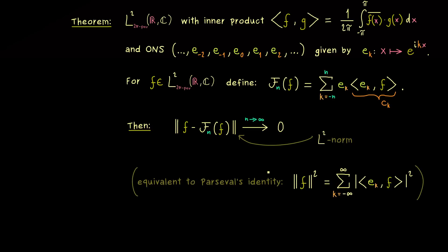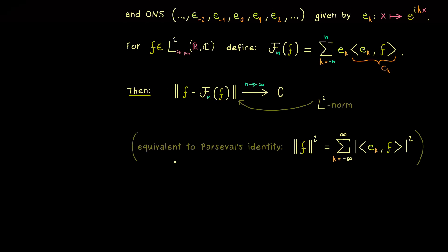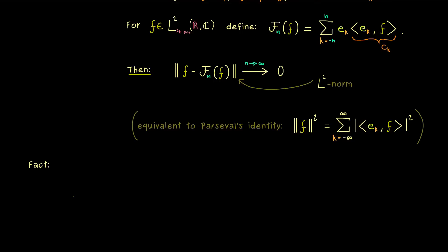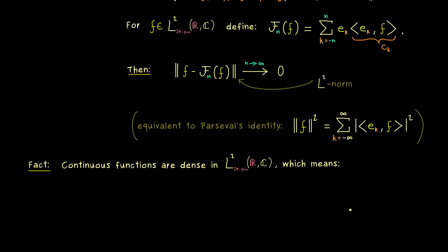This is not so simple, so we first have to do some preparation before we can start with the actual proof. Let's start by stating a fact which might be well known for the L2 space: the continuous functions are dense in the square integrable functions. This means that every L2 function can be approximated by continuous functions with respect to the L2 norm.